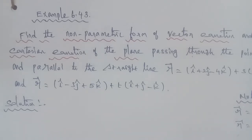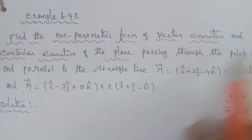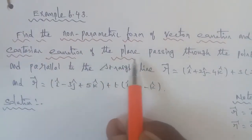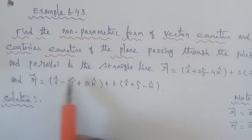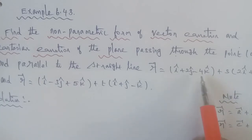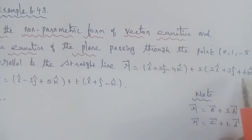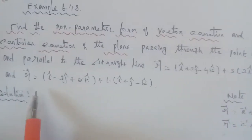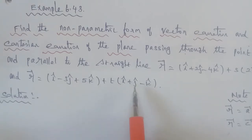Hi students. Example 6.43: find the non-parametric form of vector equation and a Cartesian equation of the plane passing through the point (0, 1, minus 5) and parallel to the lines: r vector equals i cap plus 2j cap minus 4k cap plus s(2i cap plus 3j cap plus 6k cap), and r vector equals i cap minus 3j cap plus 5k cap plus t(i cap plus j cap minus k cap).